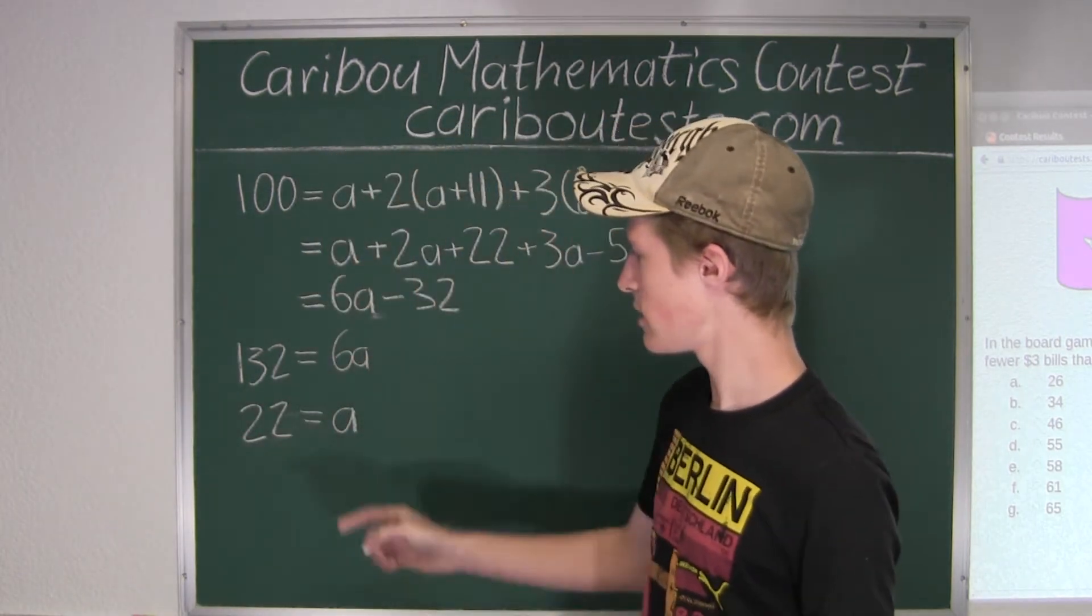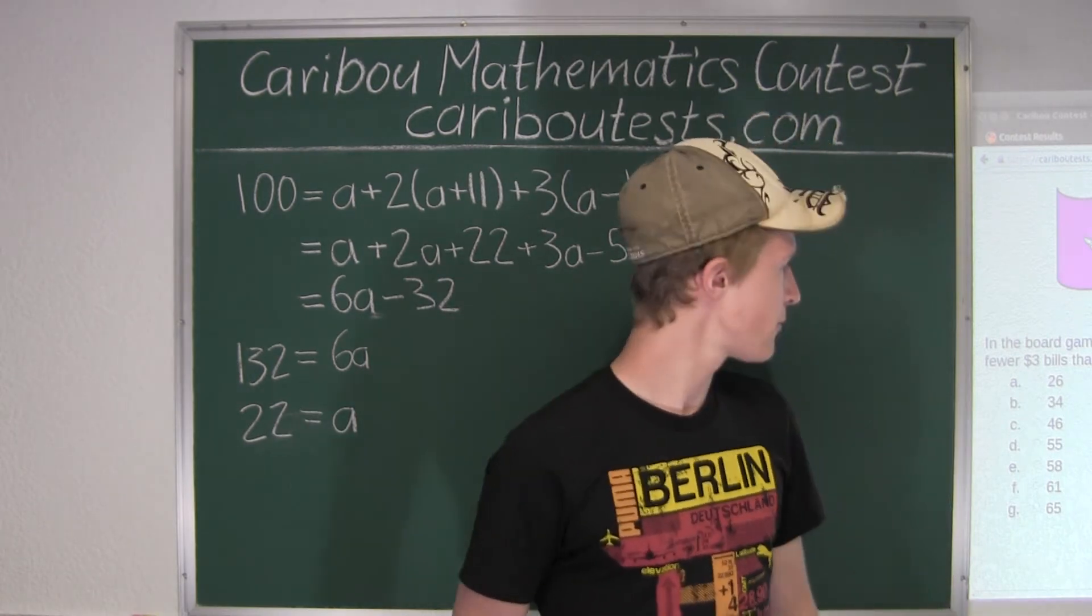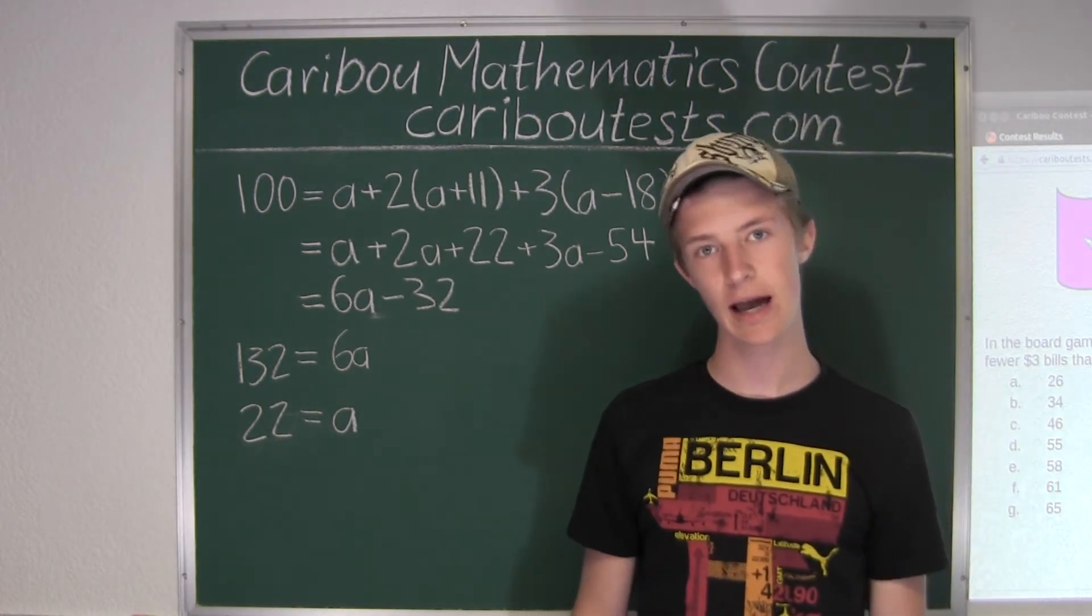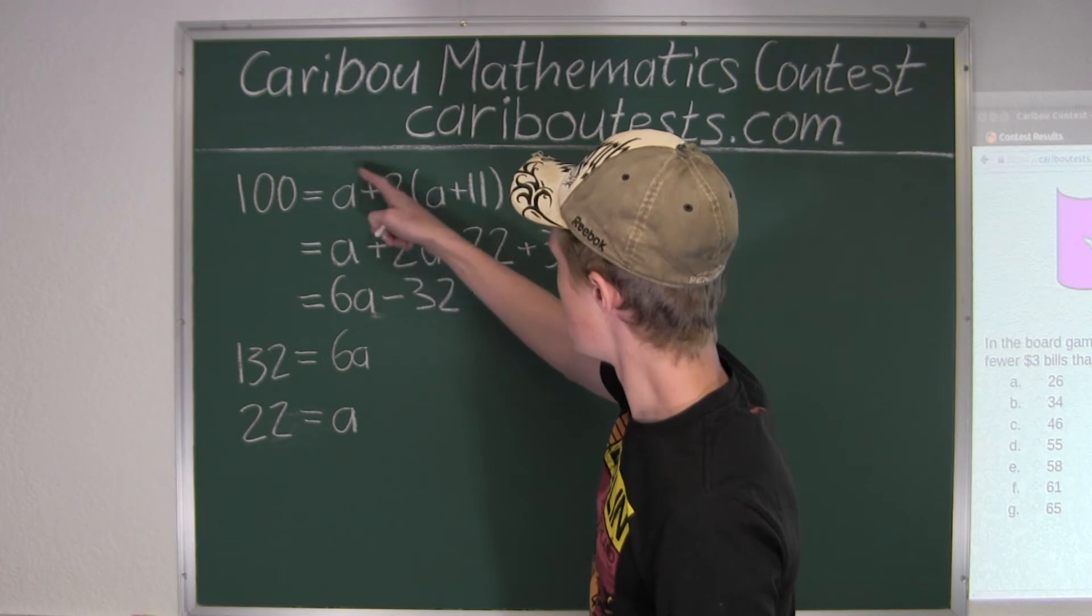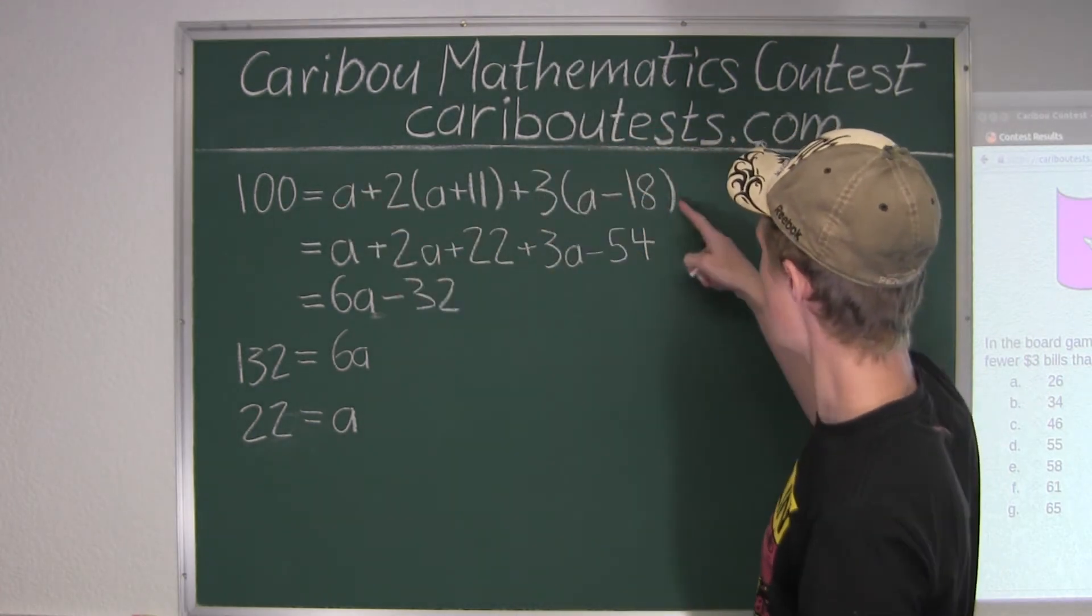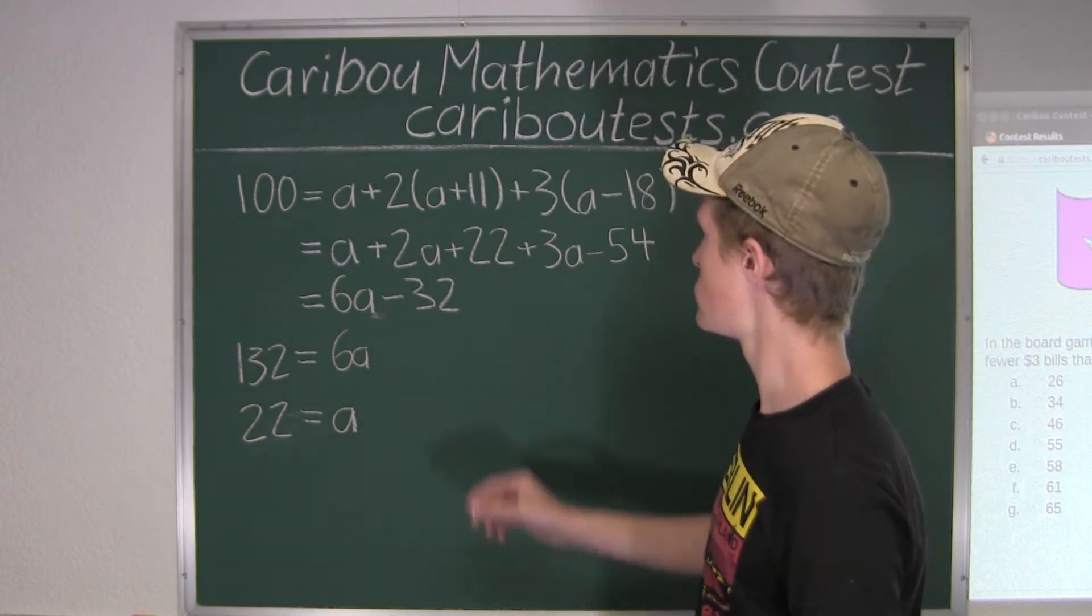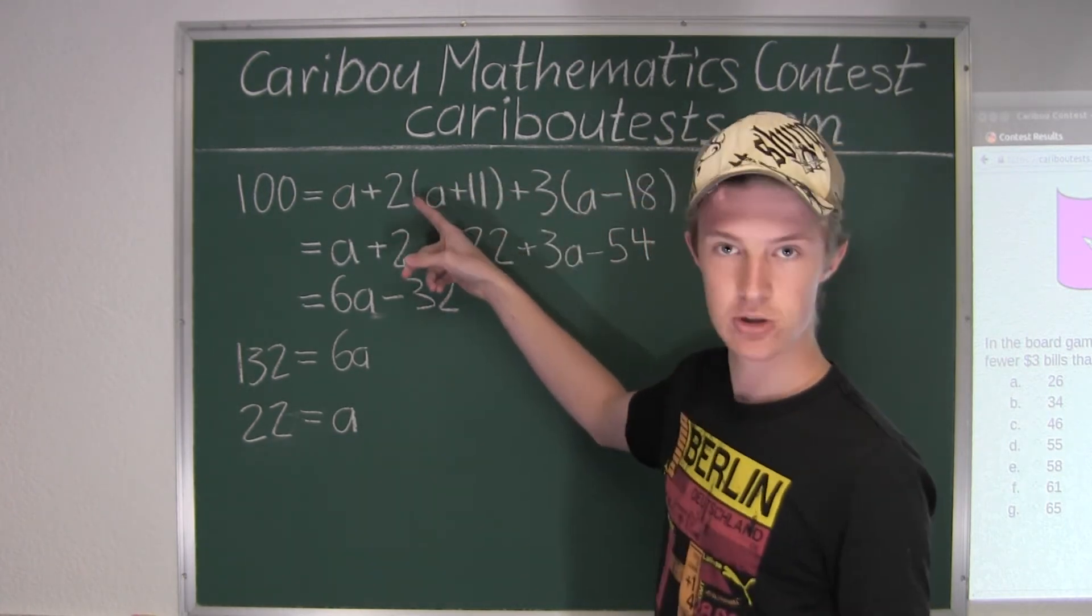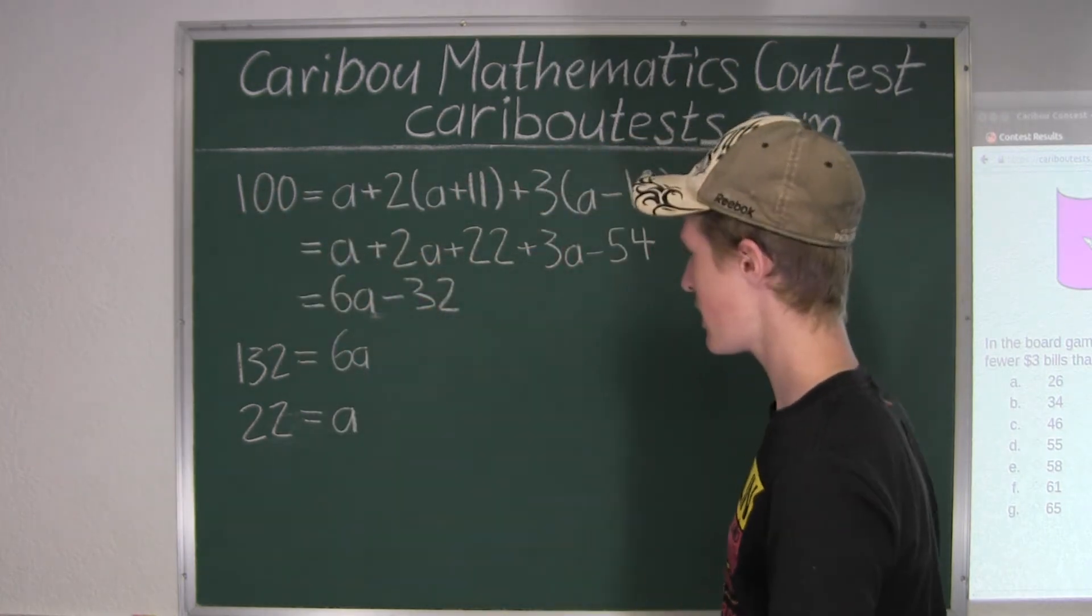So we know that there are 22 $1 bills. From the question, it asks what is the value of the $1 and $3 bills together. We could either directly calculate this, but what is a lot quicker would be to just calculate the value of the $2 bills together and then subtract that from 100.